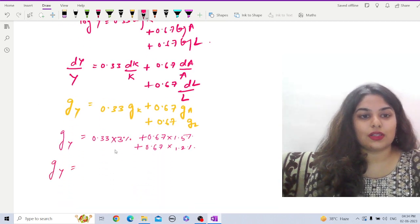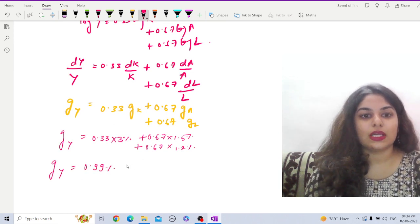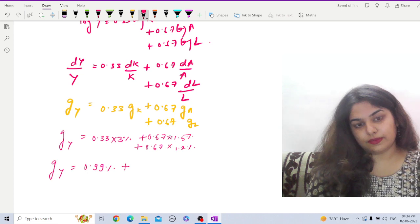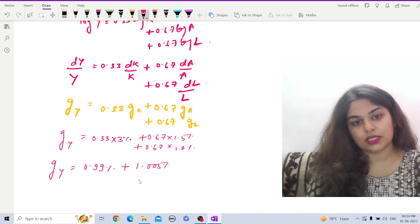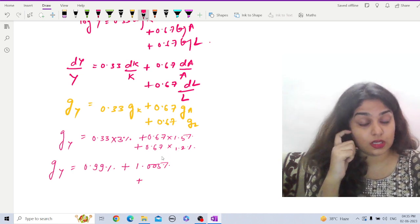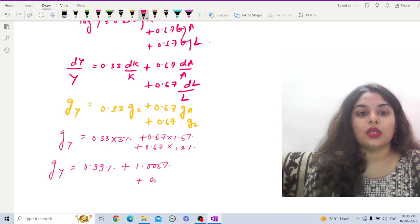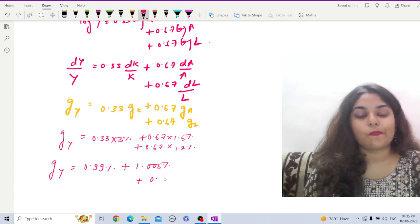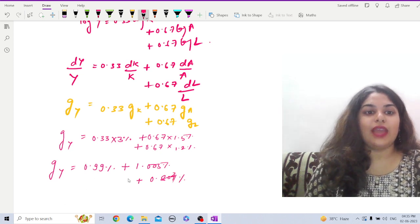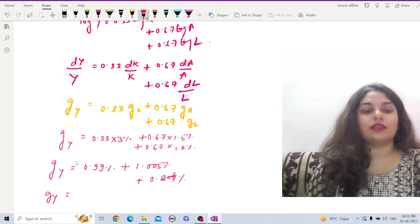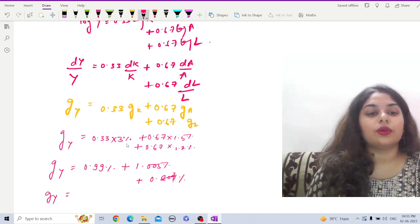Now let us multiply. So gY equals - this is 0.99% plus this will yield 1.005% plus this is 0.67 times 1.2%, so that is 0.804%.